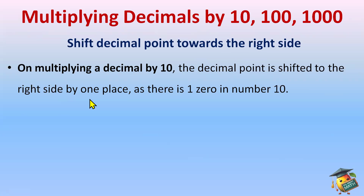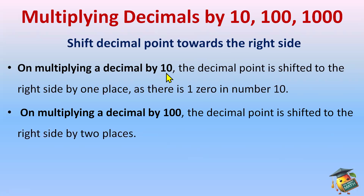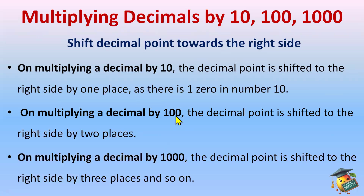There is one zero in ten. On multiplying a decimal by hundred, the decimal point is shifted to the right side by two places, as there are two zeros in hundred. On multiplying a decimal by one thousand, the decimal point is shifted to the right side by three places. For ten thousand, which has four zeros, the decimal point is shifted right by four places.